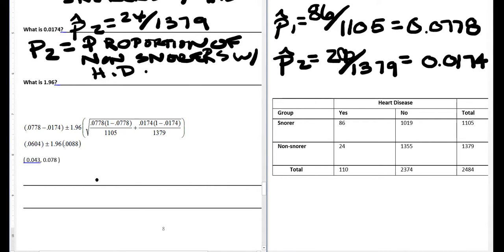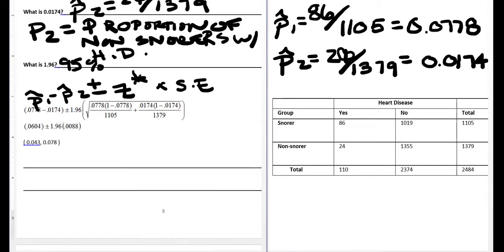So now when we look at the formula for the confidence interval, what you'll notice is that I'm taking p-hat sub 1, I'm subtracting p-hat sub 2, plus or minus—and the 1.96 is the multiplier for 95%, so that would be our confidence level, so that's our z-star—and then we're multiplying that by standard error. So the resulting confidence interval ranges from 0.043 to 0.078.